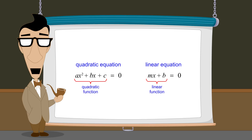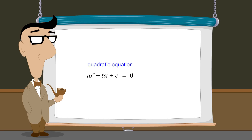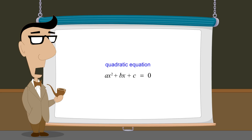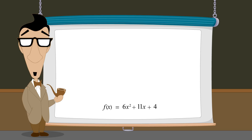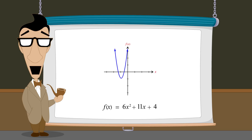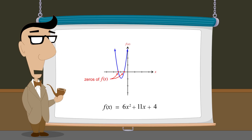However, quadratic equations are typically not as easy to solve as linear equations. For example, without techniques beyond what we have learned so far, the quadratic equation 6x-squared plus 11x plus 4 equals zero could be quite difficult to solve. If we graph the quadratic function 6x-squared plus 11x plus 4, we see that there are two values of x which cause the function's value to be zero, but to find these x-values, we must solve the quadratic equation.